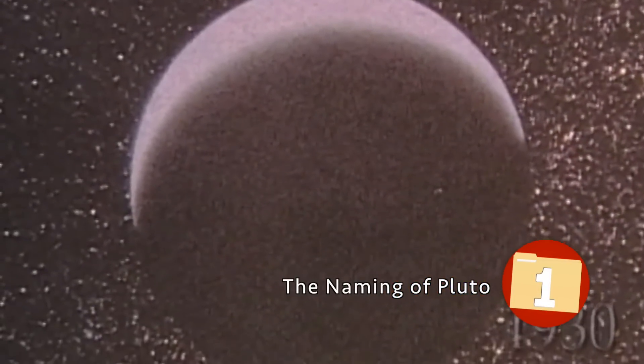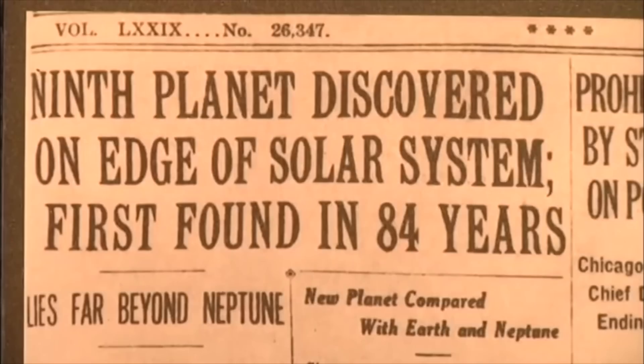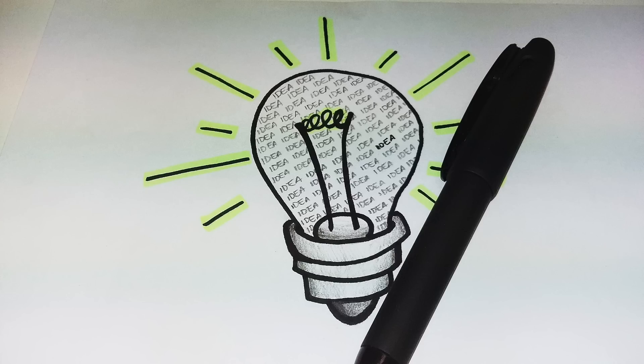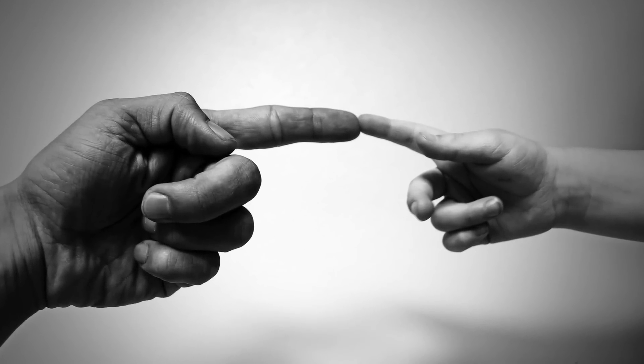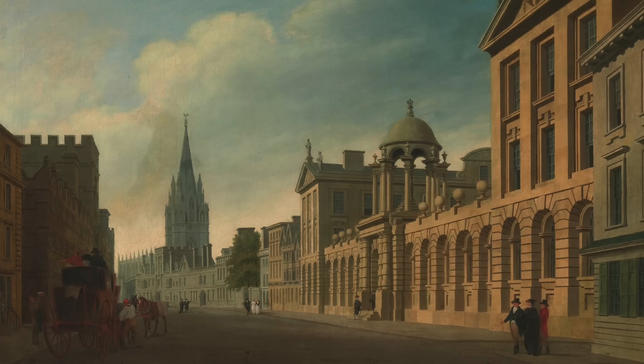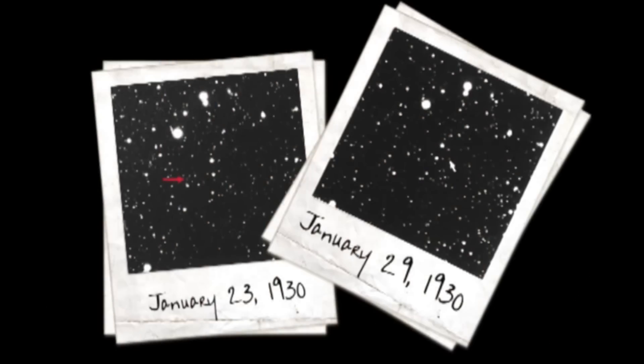The Naming of Pluto. The process to find Pluto was a long and drawn out one, taking years of research and much manpower. The naming of the dwarf planet was something far less complicated and involved a young, intelligent mind and the proper connections. Falconer Madden, a retired librarian from Oxford, was with his 11-year-old granddaughter, Venetia Burney, reading out loud the discovery of a new planet, then named Planet X.